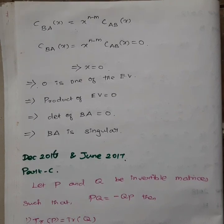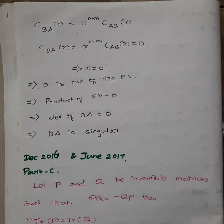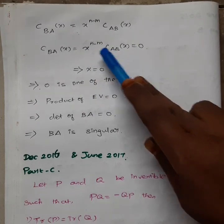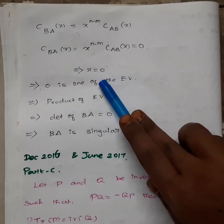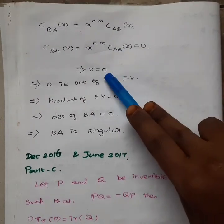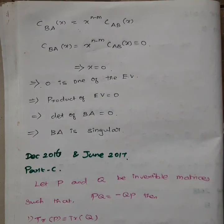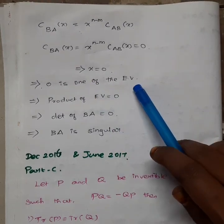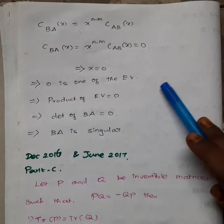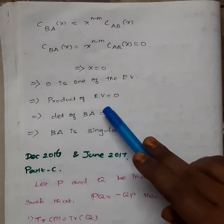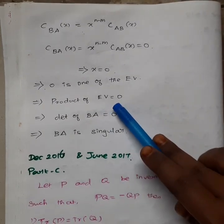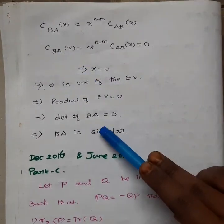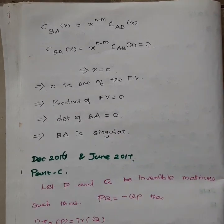We can write the eigenvalue equation. Assuming this equals zero, then zero is one of the solutions, meaning zero is one of the eigenvalues of BA. If zero is an eigenvalue and we multiply all eigenvalues, the product is also zero. The product of eigenvalues equals the determinant — so det(BA) equals zero, which means BA is singular. That's the answer.